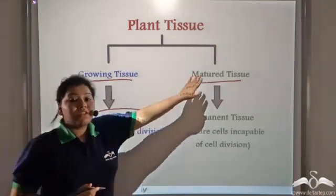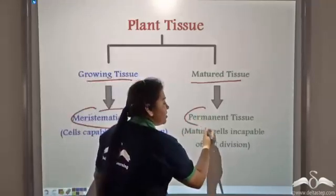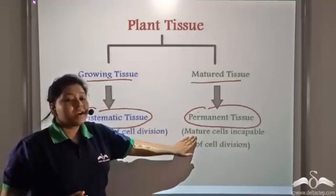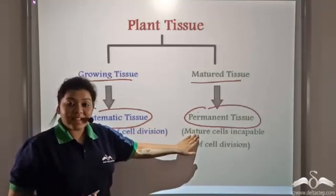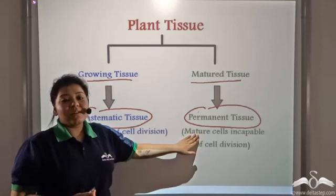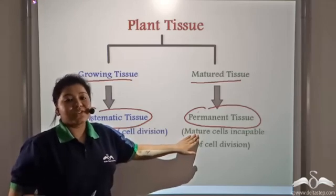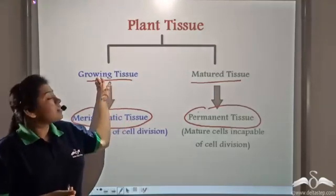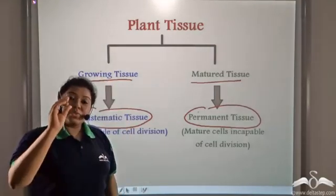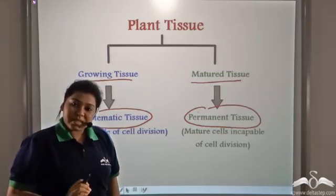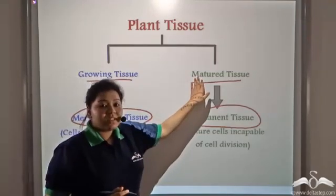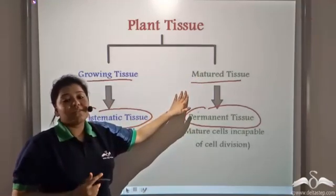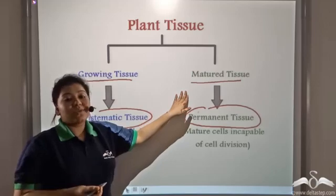The matured tissue is known as the permanent tissue. The permanent tissue consists of matured cells that are incapable of cell division and growth. So the plant consists of two kinds of tissues: the growing tissues that are present at the shoot tips and root tips, and the matured tissue present in the stem or trunk of the plant that does not grow any further.